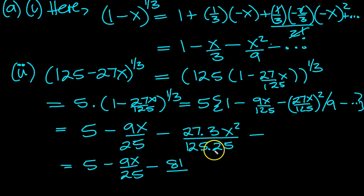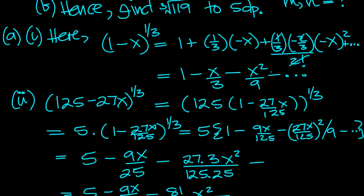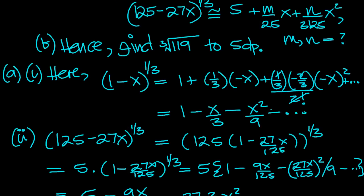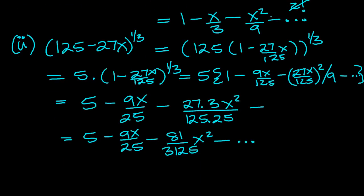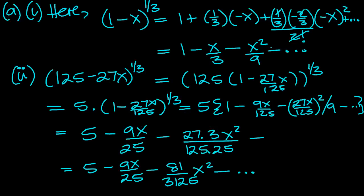So what does that equal then? That will equal 5 minus 9x over 25 minus 81 over, and this would be 2,500 plus a quarter of 2,500, which is 625, so 3,125. Tap in the calculator if you need to. X squared minus dot, dot, dot. So what did we have to show? Let's have a quick look. M over 25 and N over 3,125. And it was a minus is still there, I presume.